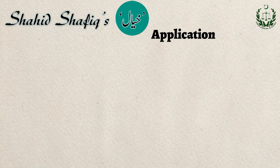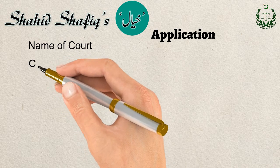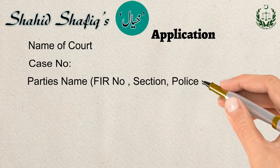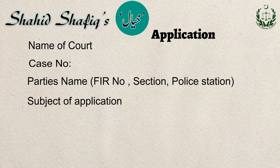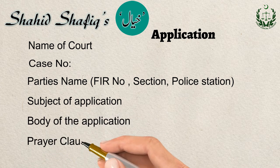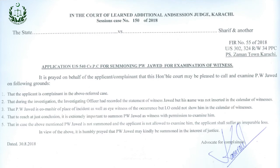How to write an application: The title of the application should have the name of the court, case number, party's name, subject of application, body of application, prayer clause, and signature of the advocate. The format of the application can be seen here.